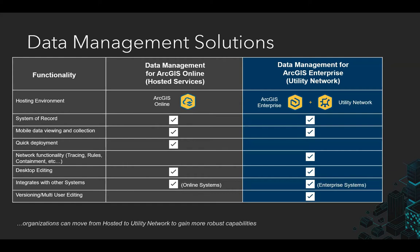The utility network can also integrate with other systems. When it comes to integrating with asset management, customer billing, or SCADA systems, the utility network is generally the better and more practical option. If you require multi-user editing workflows, this is only available through the utility network and not through ArcGIS Online. The enterprise solutions essentially have all the functionality of the online solutions, but have the additional capabilities of those network functions like tracing, rules, and containment. The benefit of the online solution is that it's easier to deploy and takes a lot less resources to manage.